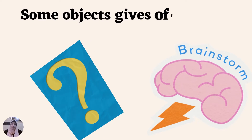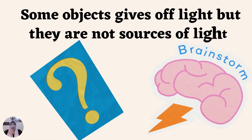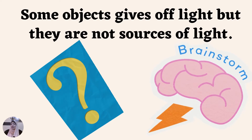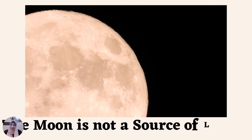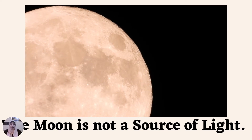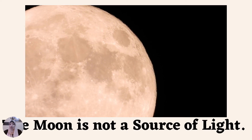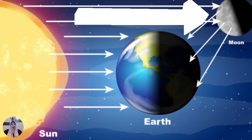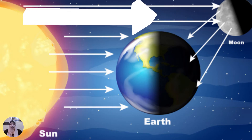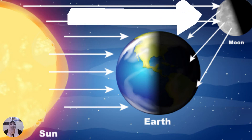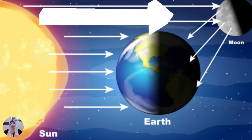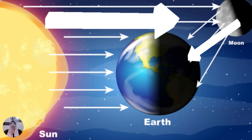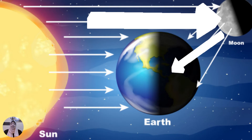Some objects give off light but they are not sources of light. I'm sure you said the moon. The moon produces light — we can see it shining bright at night — but it is not a source of light. The moon is a planet, not a star, so it doesn't have its own light. What happens is the light from the sun hits the surface of the moon, and then the moon's surface reflects that light back to the earth.